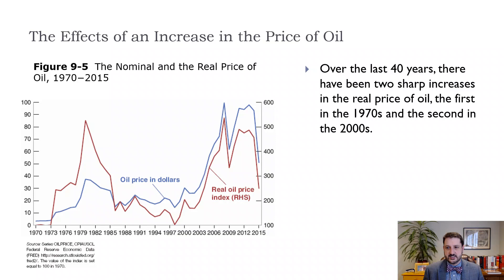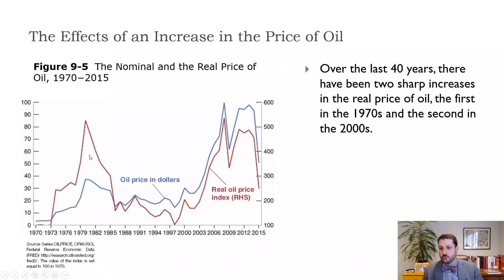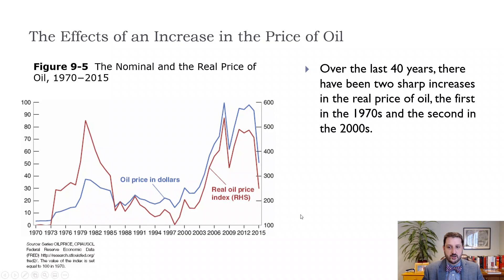Now let's think about the effects of an increase in the price of oil. When OPEC was formed in the 1970s, combined with a couple of Arab-Israeli wars, the price of oil was pushed up. This blue line is the nominal price of oil from 1970 to 2015, and the red line is the real price of oil adjusted for inflation. The real price of oil in the late 1970s was basically the same as when it spiked around 2007, but the 2007 spike didn't cause a recession the same way — mainly because we're not as dependent on oil as we were in the 1970s.